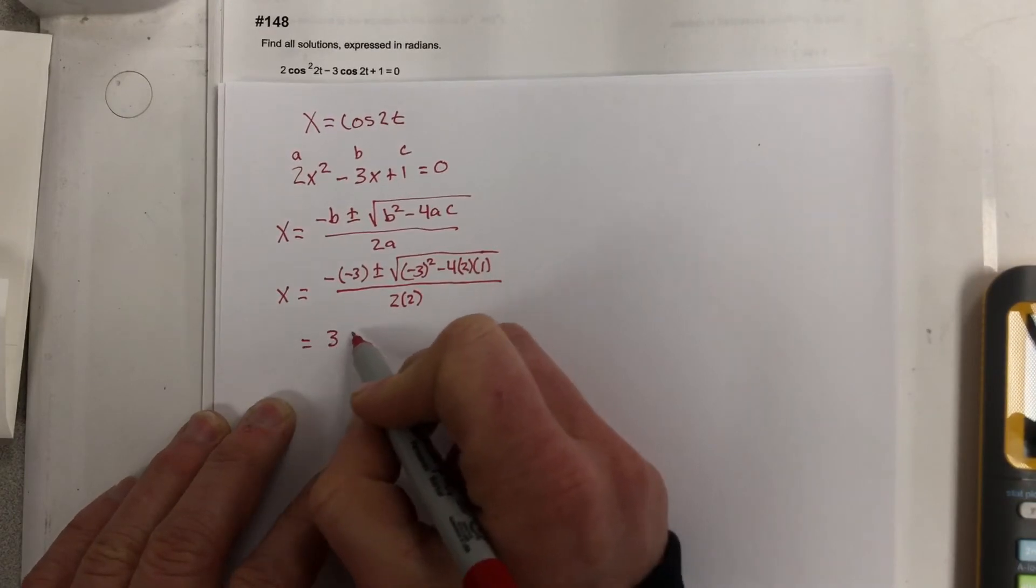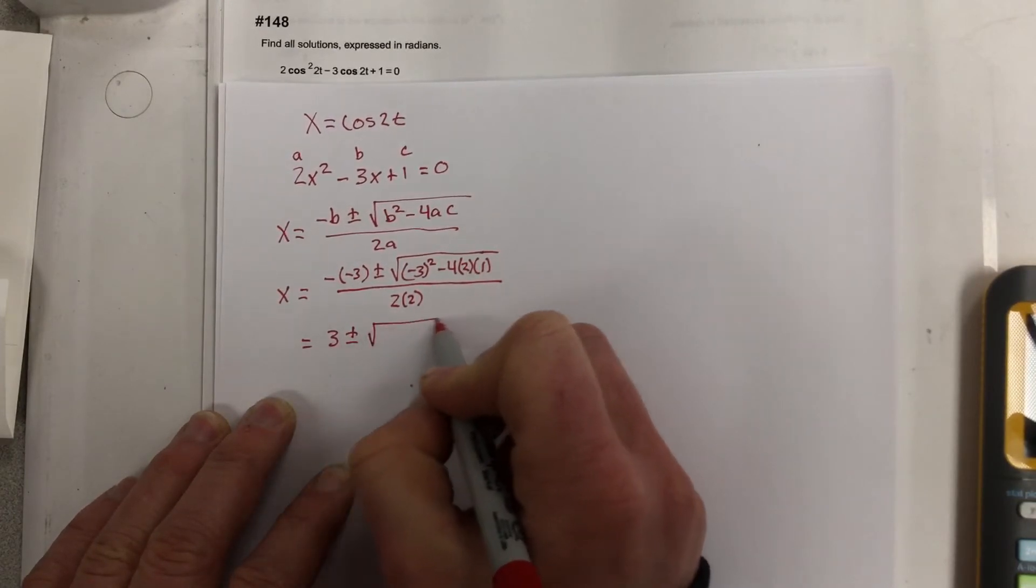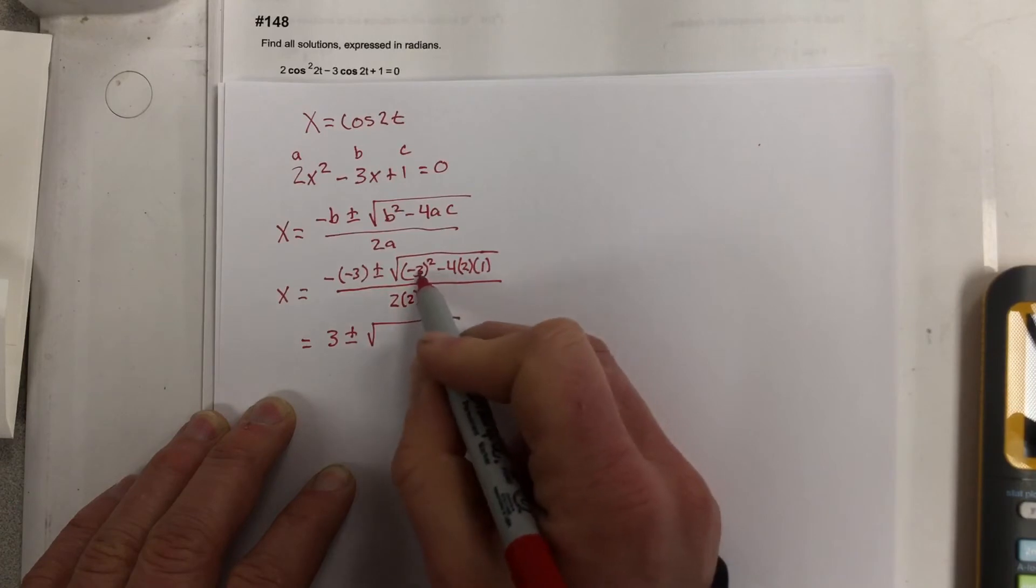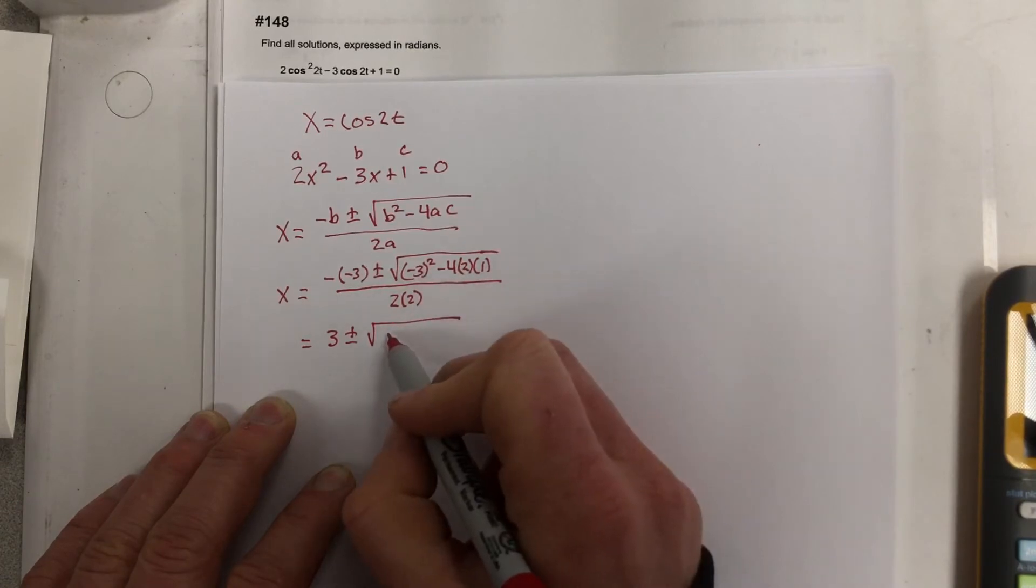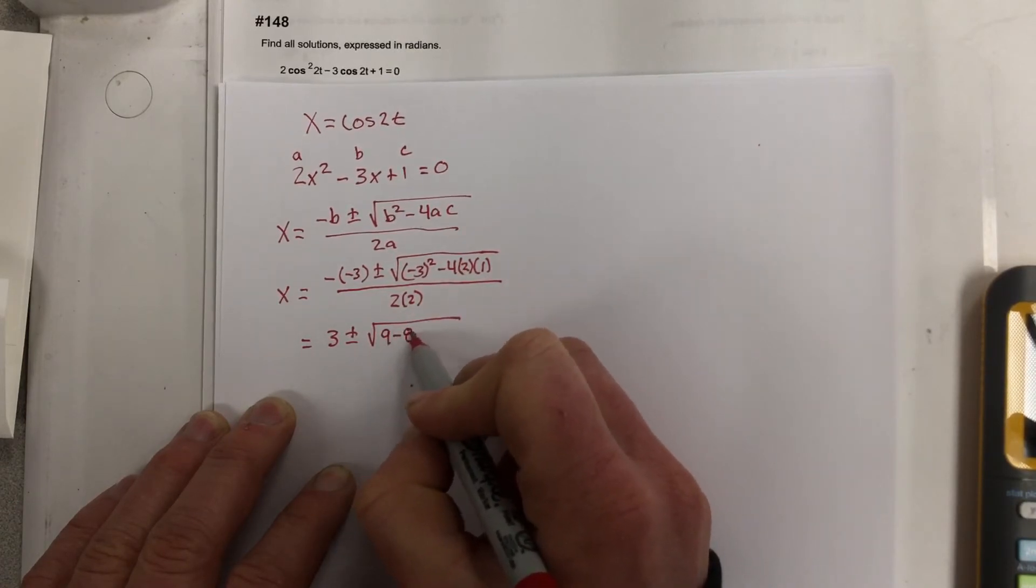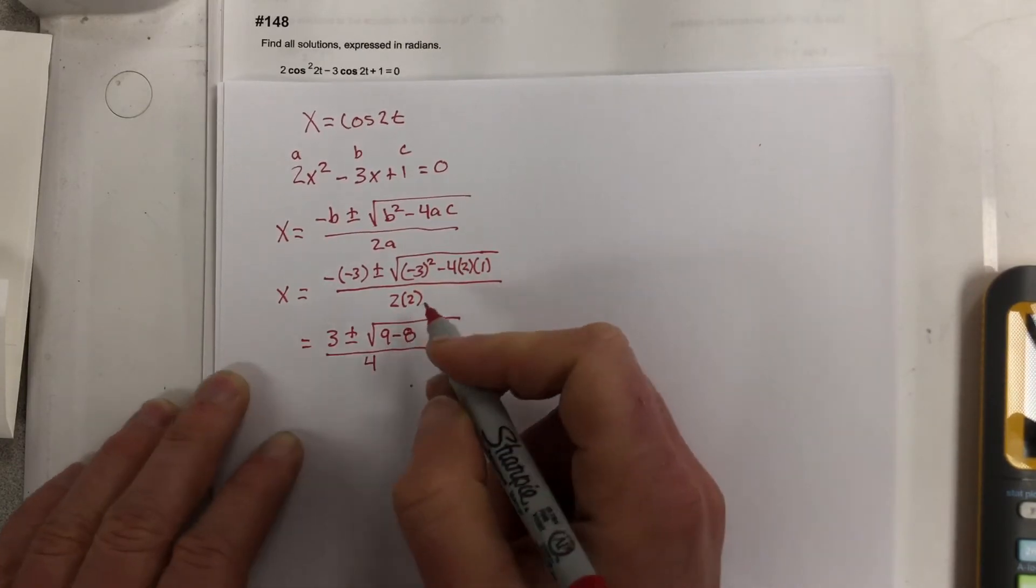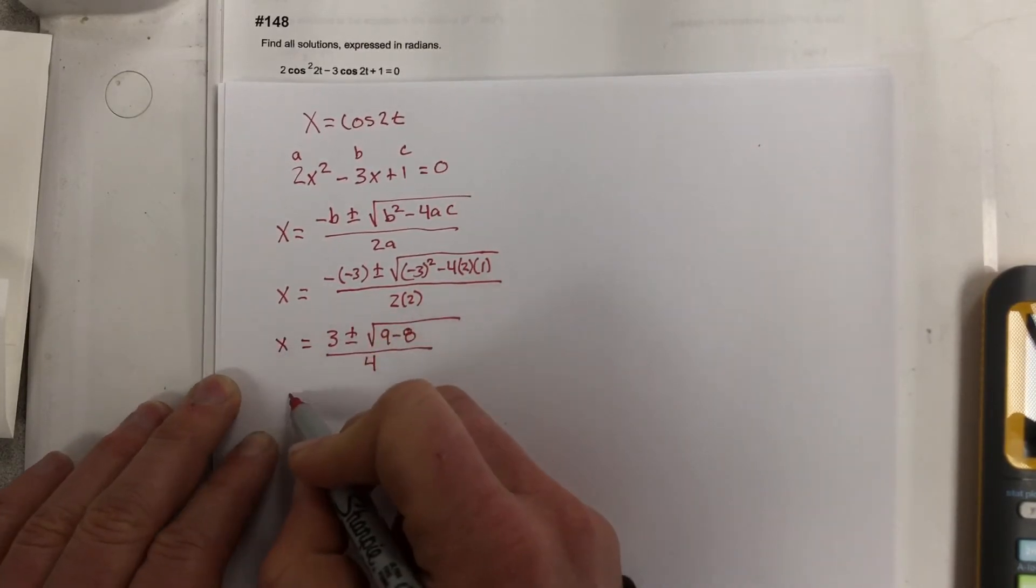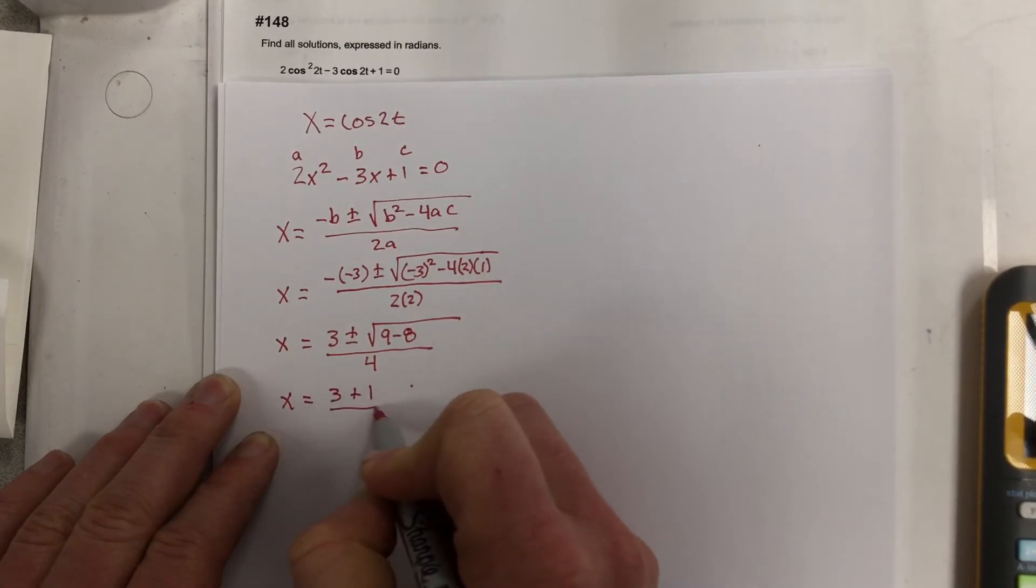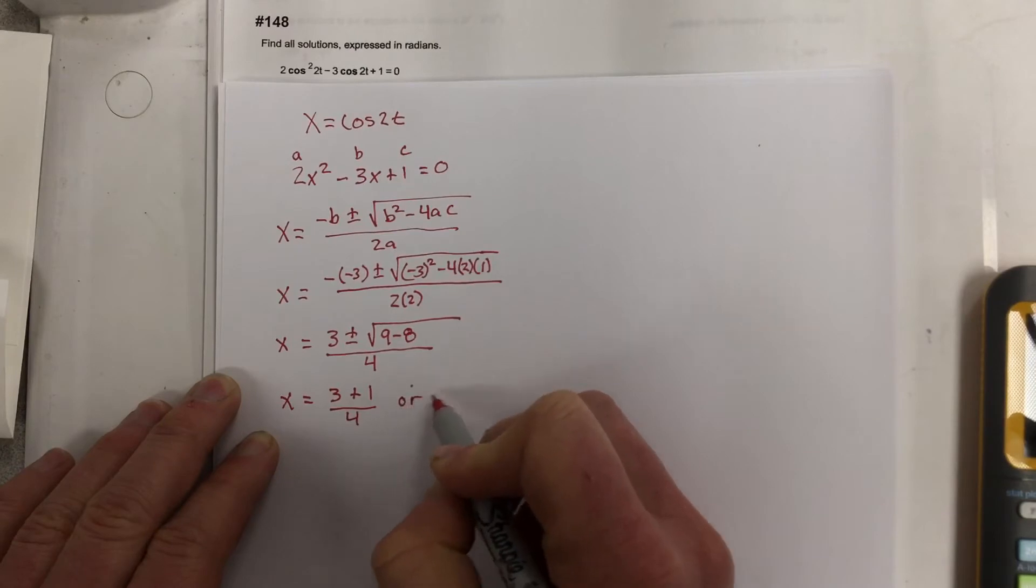So we end up with 3 plus and minus root. This will just be 9 minus 8, which is 1. I'll write the 9 minus 8 piece over 4. So I end up with x equals 3 plus 1 over 4, or 3 minus 1 over 4.